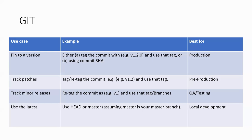If you have a pre-production environment, you want to have some patches to be tracked — like if there is a bug you are working on, you want to see how it's performing on the non-prod or pre-prod environments. You can use particular tags, or you can use the selected versions or proper tagging. Tagging helps best for pre-production.